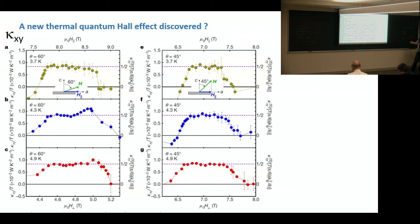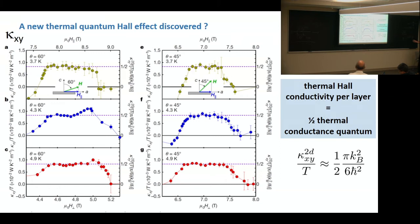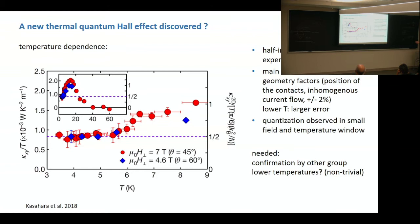So this is different data for two different angles of magnetic field, six degree and 45 degrees, and several temperatures, as a function of the magnetic field. And you see there's a dashed line. So what is this dashed line? The dashed line is what the authors have done. They actually just used the known lattice spacing of the system and calculated the thermal conductivity per layer of this material. When you do that, then you get exactly here one-half of the thermal conductance quantum.